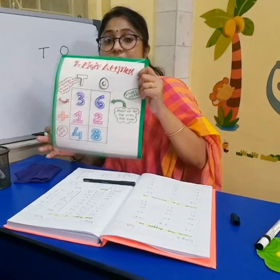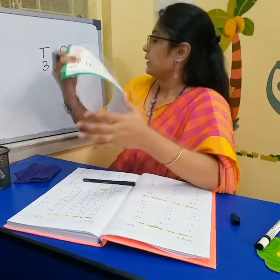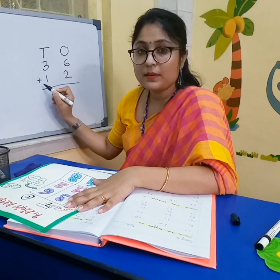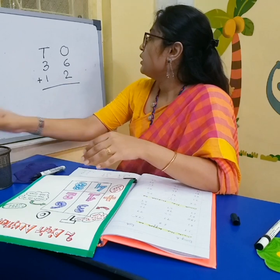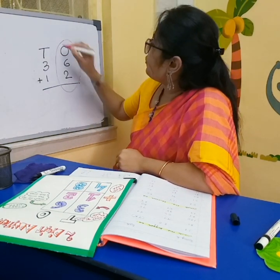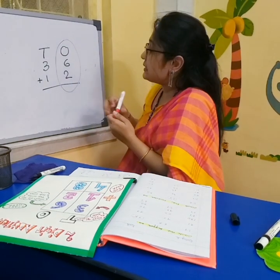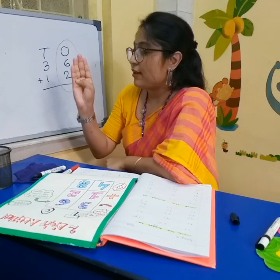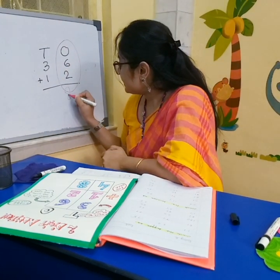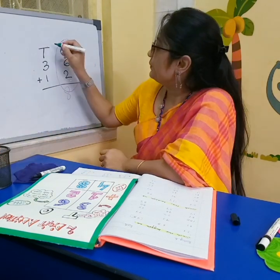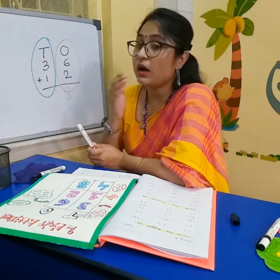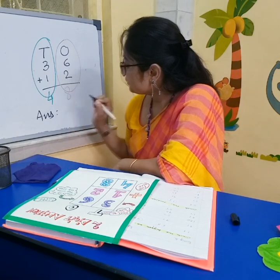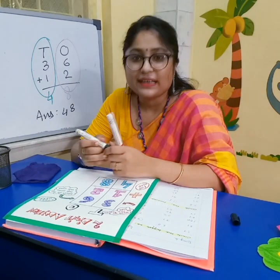Now here I have given 36. This is the plus sign. We have to do the ones column first. Here it is six plus two. That means six, seven, eight. So we write eight here. Now we do the tens column. Here is three plus one: three, four. So we write the answer: forty-eight.